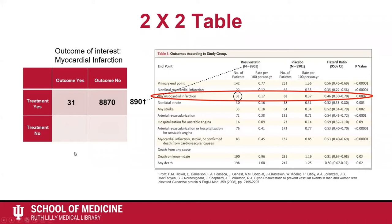Now let's look at the people who did not receive the statin treatment. 68 people who were given a placebo experienced a myocardial infarction. So in the two-by-two table, 68 goes into the treatment no, outcome yes square. If 8,901 patients were given a placebo, how many patients did not receive the treatment and did not experience the outcome of myocardial infarction? You are correct if you answered 8,833 patients. You get that answer by subtracting 68 from the total who received the placebo, 8,901, to get 8,833.